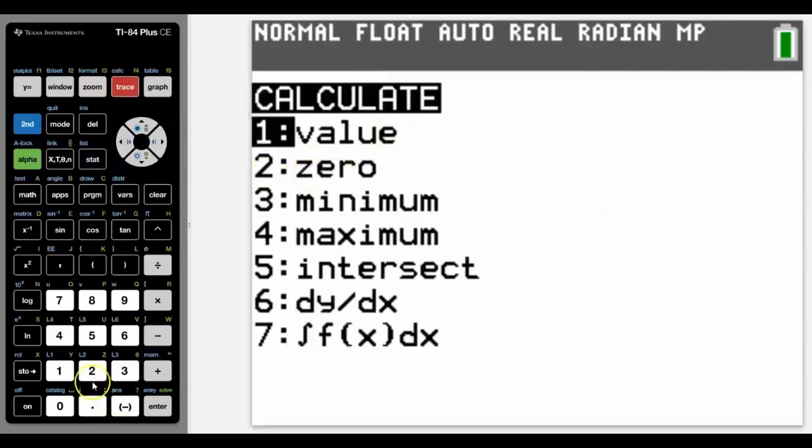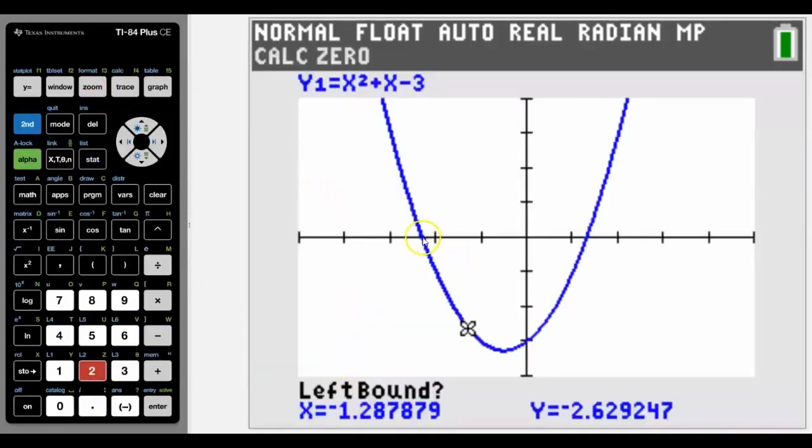Secondly we're going to look at zero and we know that the zeros are where the curve crosses the x axis.